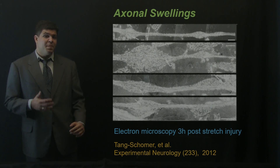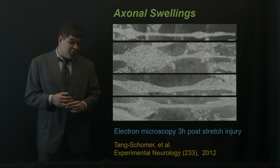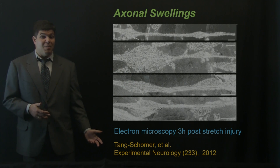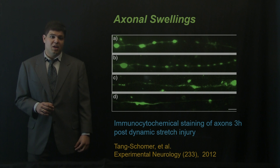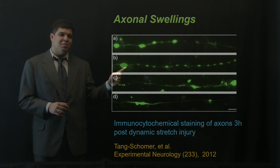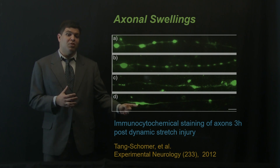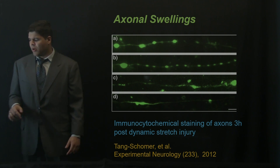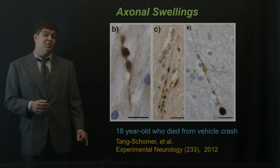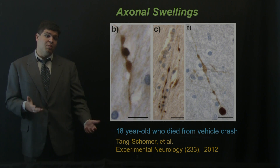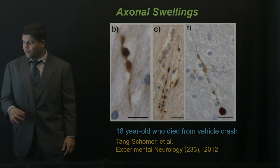Here are images with immunohistochemical staining of axons showing why these features are called bulbs, ovoids, or spheroids — though some present more complicated geometries that we'll explore in more detail later. Here are examples of axonal swellings from an 18-year-old who died in a vehicle crash. Since the person died, an autopsy of the brain was possible, confirming that the neurons were full of focal axonal swellings.